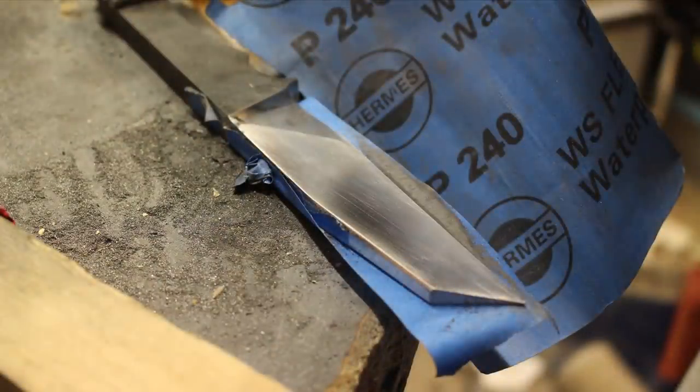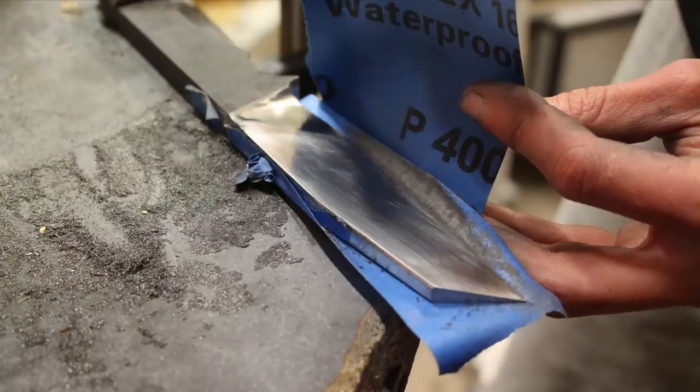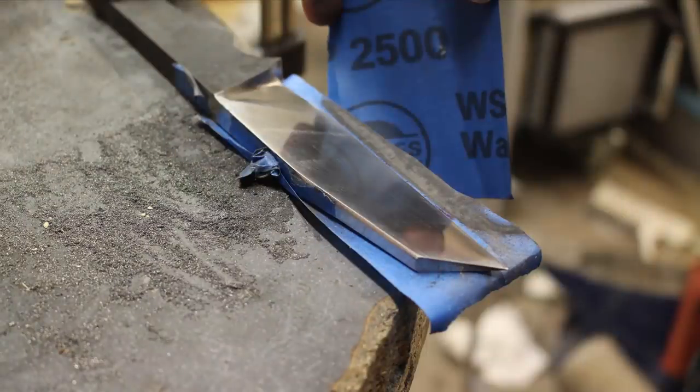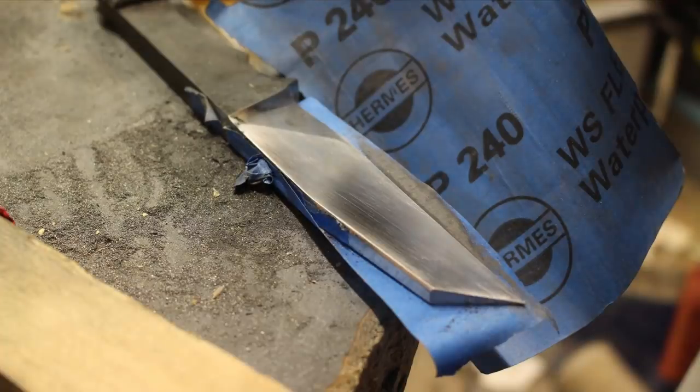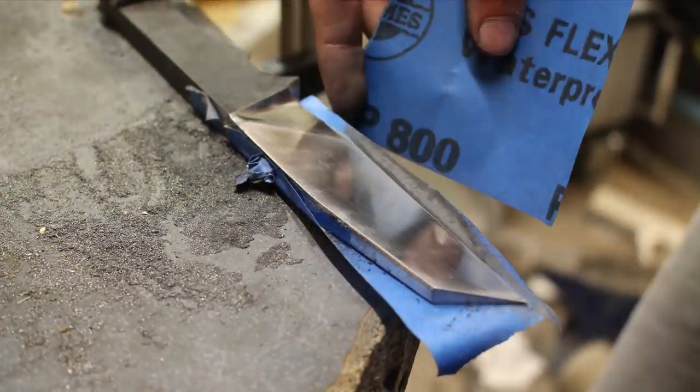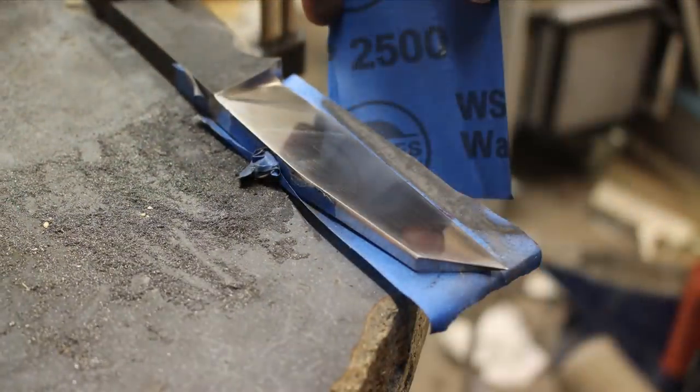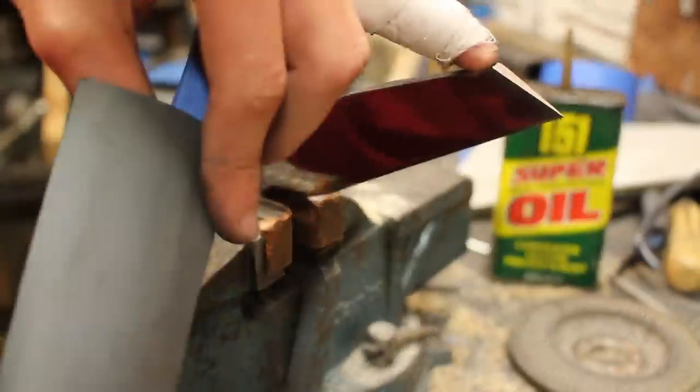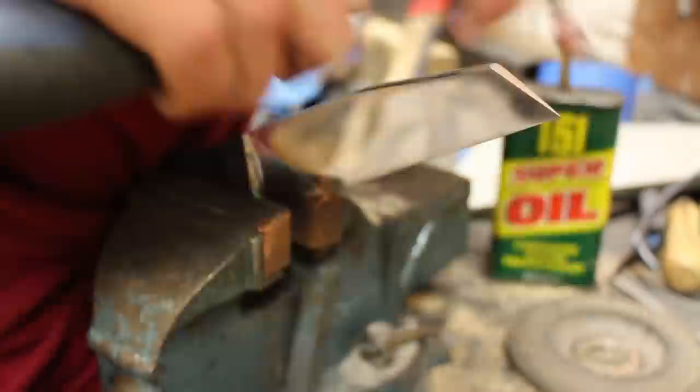So I start at 240 grit and literally just work my way up: 400, 600, 800, 1500 then 2500 grit. The most important thing is to spend loads of time on the lower grits to remove any deep scratches left behind by previous processes. Also because this metal is so hard now you have to use really high quality silicon carbide abrasives, anything else won't work.